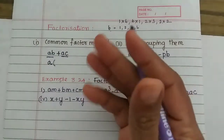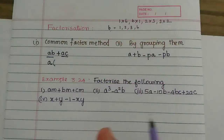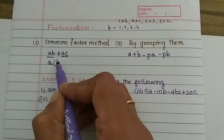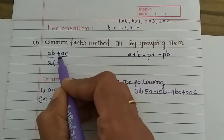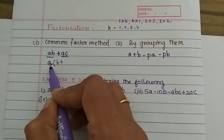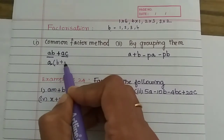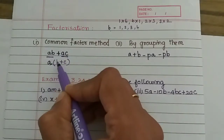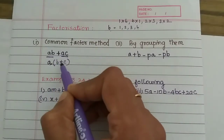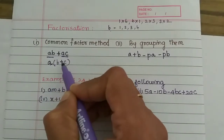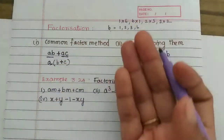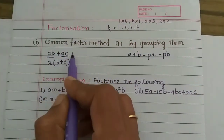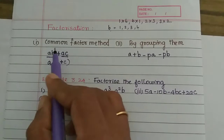In these two terms, A is a common number, so we can take out A as common. We write A outside the bracket, then inside the bracket we write B plus C. Checking: A into B is AB, A into C is AC, and there is a plus. So this gives us A into (B plus C). This is the common factor method.